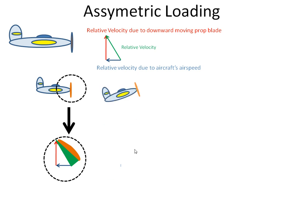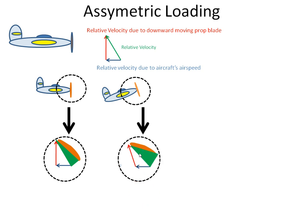Now if the aircraft pitches up slightly, looking at the hub, we can see that the angle of attack has increased slightly, and that the relative airflow over the forward-going or downward-moving blade will have increased. Conversely, the airflow over the upward-moving or rearward-moving blade will have decreased.